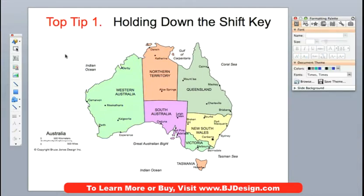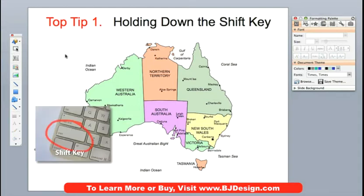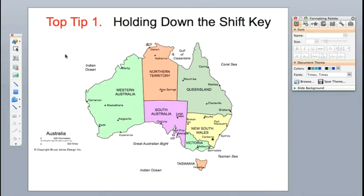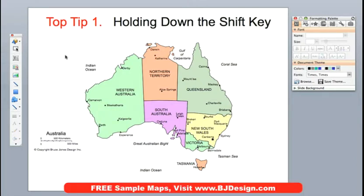When you're customizing maps, one of the most important keys on your keyboard to help you is your shift key. The shift key is right there in the lower left, and also on the right-hand side of your keyboard. What the shift key does is it allows you to select a whole group of objects.